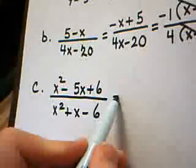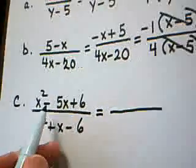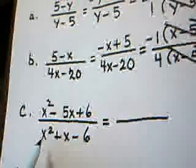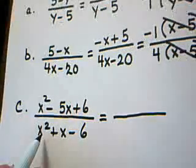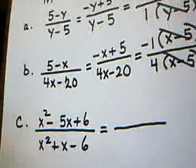Problem C. In the numerator, I have x squared minus 5x plus 6, which is a trinomial. In the denominator, I have x squared plus x minus 6, which is another trinomial. Again, factor first, and then see what cancels.